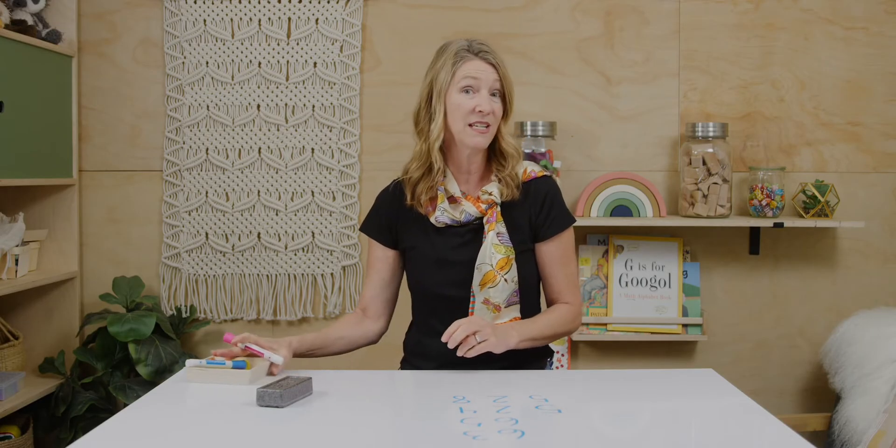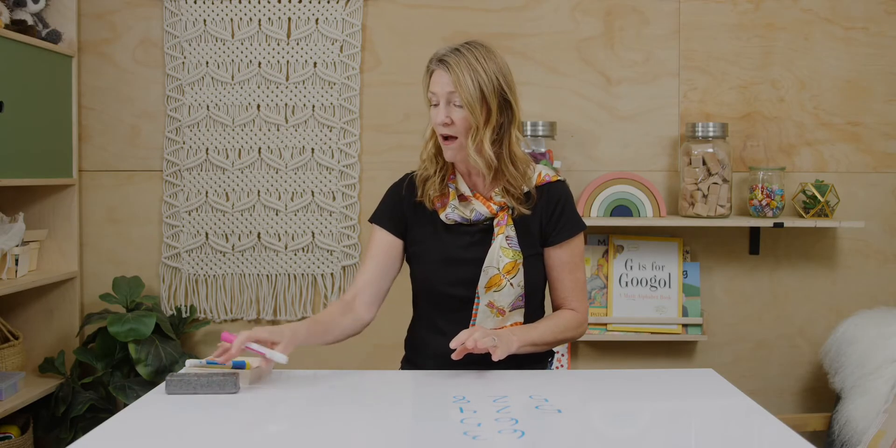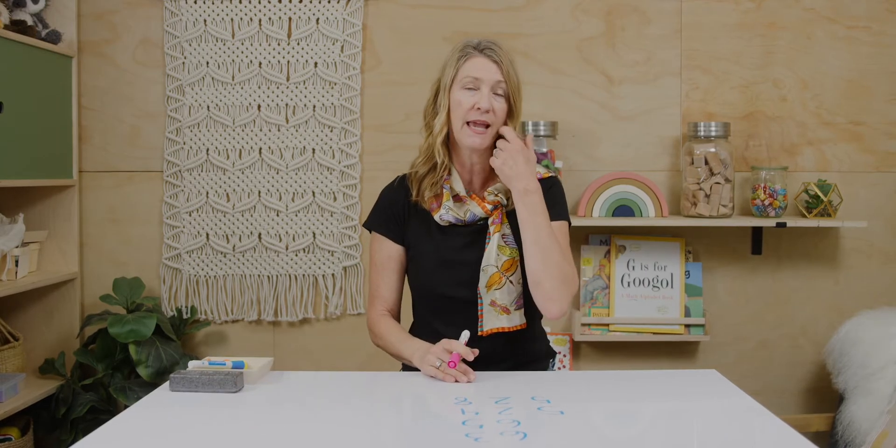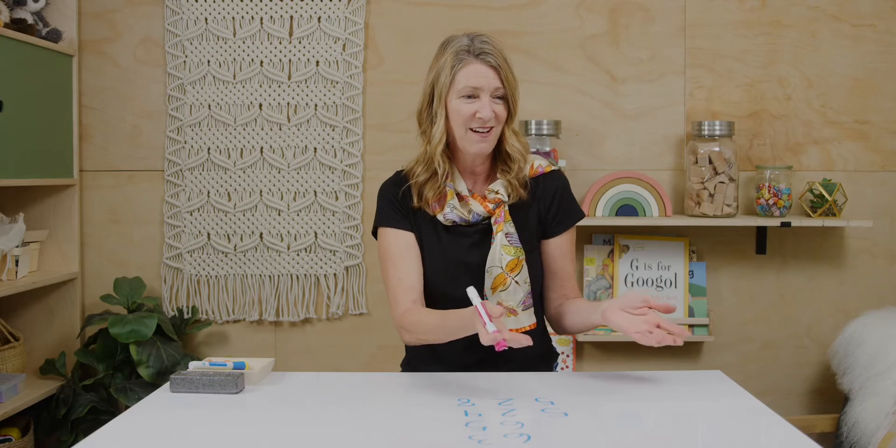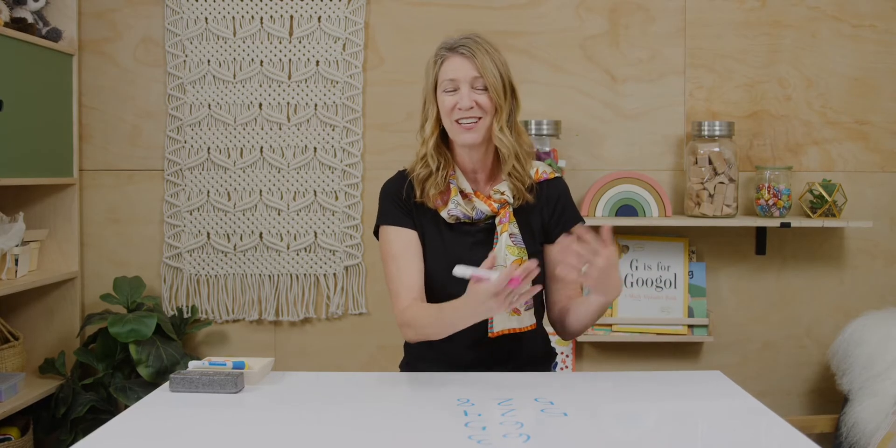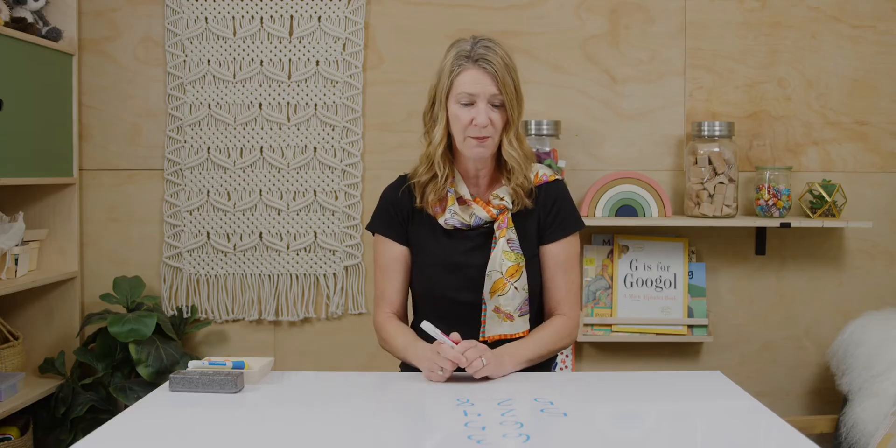When we talk about rounding numbers, we are looking at making them an easier number to think about. Sometimes we do this to add and subtract and test whether our addition and subtraction makes sense. Sometimes we do this just to generalize, you know, maybe you have a bowl of M&Ms and you say oh I think I have about a hundred M&Ms in there. So you're generalizing and estimating, and we can do that with actual numbers when we're rounding.